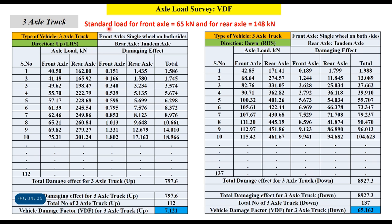For a three-axle truck, the standard load for the front axle is 65 kN and for the rear tandem axle it is 148 kN. The front axle damage factors are calculated as before. The rear axle damage factor is calculated as (162 / 148)^4, which gives 1.435. The total damage effect is the sum of front and rear axle values for all 112 trucks, giving an average vehicle damage factor of 7.121 in the up direction and 65.163 in the down direction.